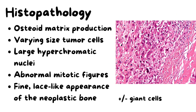Histopathologically, there is osteoid matrix production by the bone tumor cells. These cells are of varying size and shape, have large hyperchromatic nuclei, and increased mitotic figures are noted, indicating the malignant potential of the tumor. The neoplastic bone thus formed has a fine lace-like appearance, and sometimes abnormal giant cells may also be seen.